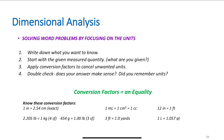One inch is exactly 2.54 centimeters. If you look at a ruler, the mark for 2.54 centimeters exactly matches one inch. This is an exact measurement, so it does not limit significant figures in calculations. One milliliter equals one cubic centimeter (1 cc) — also exact. Twelve inches is exactly one foot, and three feet is exactly one yard. Exact measurements don't limit sig figs.